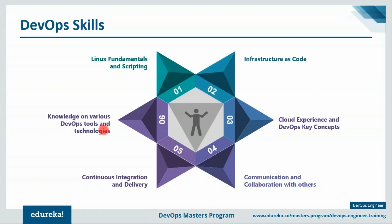He should be aware of various DevOps tools like Git, Jenkins, Docker, Puppet, Chef, Ansible, Kubernetes, Nagios, and Selenium — a wide variety of DevOps tools. If you feel there is any other important skill for a DevOps engineer to master, you can mention that in the comment section.